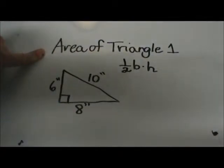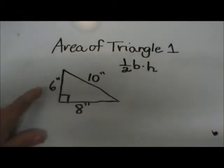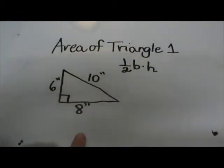We're going to start with the easiest one, which is the area of a right triangle. We are given a right triangle with one leg that is 6 inches, another leg that is 8 inches, and a hypotenuse that is 10 inches.